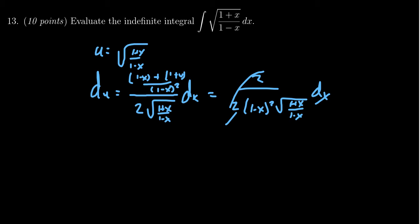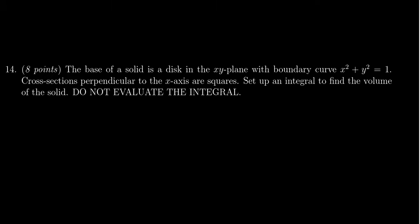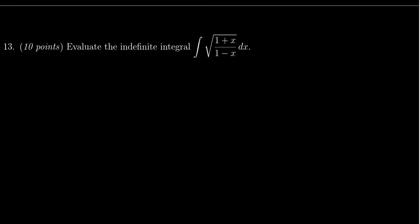And then you can get u du equals dx over 1 minus x squared. It has me scratching my head a little bit what to do with that 1 minus x squared. So I'm thinking a rationalizing substitution might not be the best approach. That's the wrong problem. Go back to where we were.